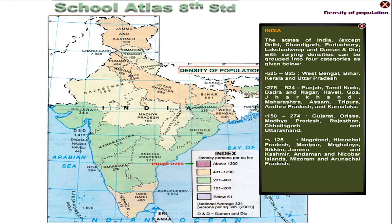The fourth category, with density less than 125, includes Nagaland, Himachal Pradesh, Manipur, Meghalaya, Sikkim, Jammu and Kashmir, Andaman and Nicobar Islands, Mizoram, and Arunachal Pradesh.